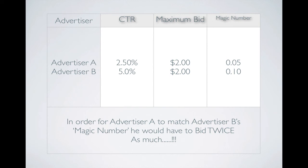In order for Advertiser A to match Advertiser B, he would have to bid twice as much. It's simple maths. Having a higher click-through rate with the same maximum bid means Advertiser B's ads are going to be served above Advertiser A's. This is how you get your ad into the top positions, and the better your click-through rate, the harder it is to knock you off those competitive top three spots.